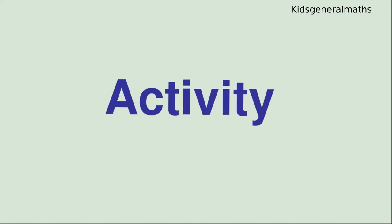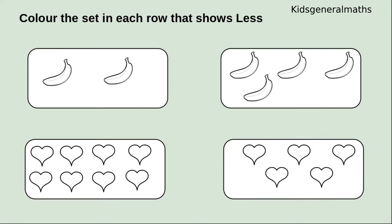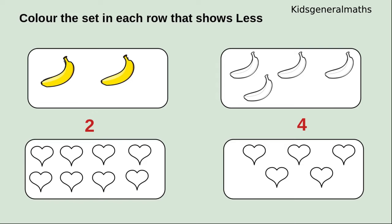Next we are going to do some activities. First we are going to count these objects and color which is less. The first box has 1, 2 — so 2 bananas. The next box has 1, 2, 3, 4 — so 4 bananas. While comparing these two numbers, which is less? 2 or 4? Yes, 2 is less. So we are going to color the 2 bananas.